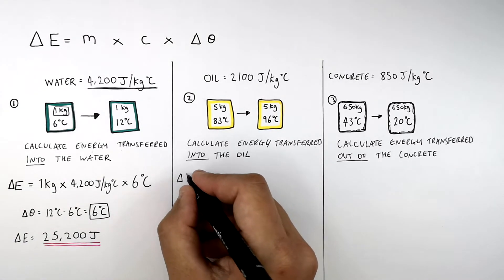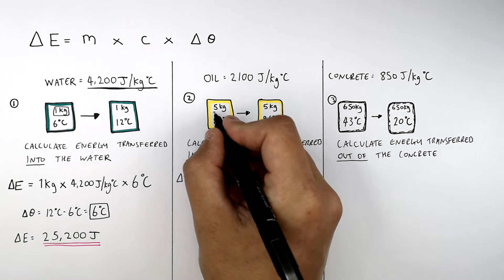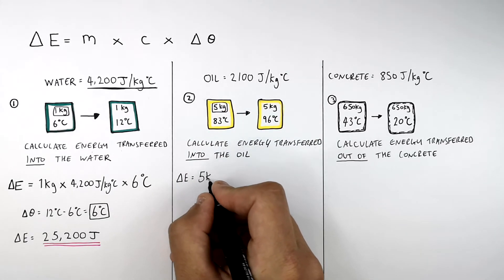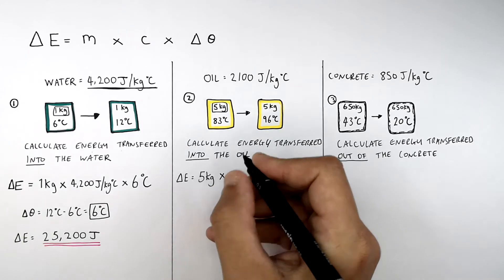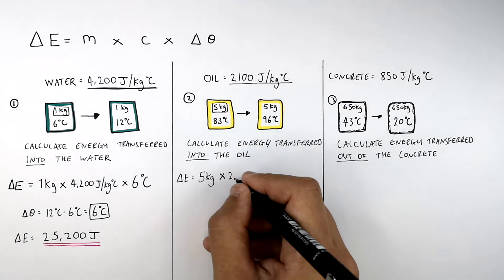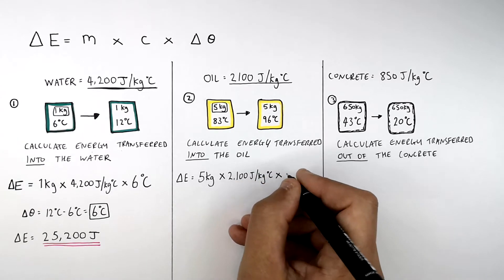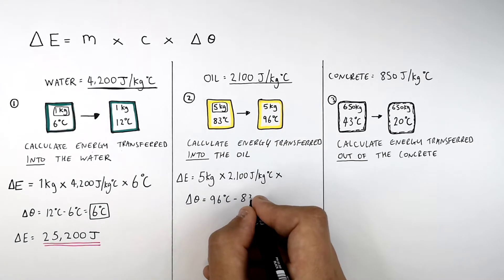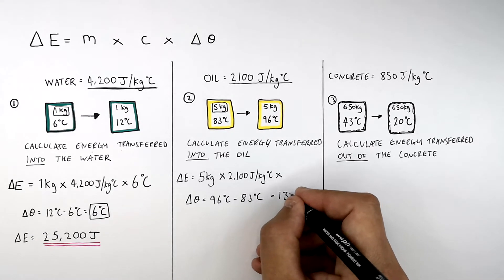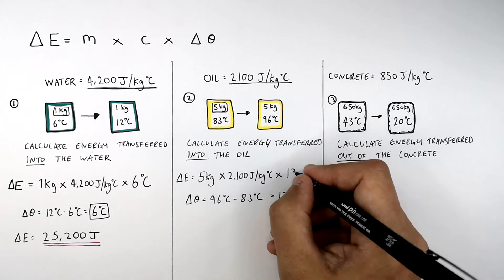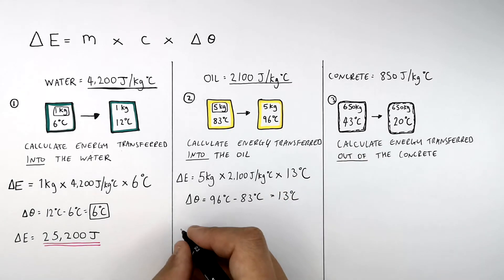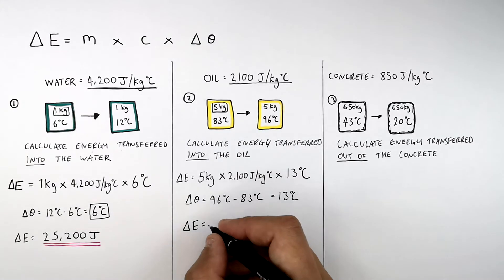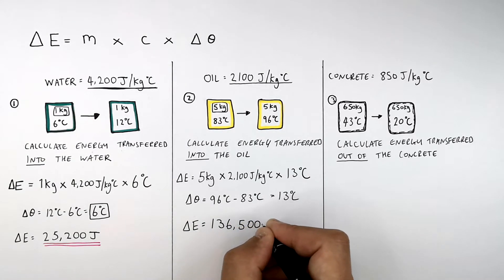We want to calculate the energy transferred into 5 kilograms of cooking oil to increase its temperature from 83°C to 96°C. Energy transferred equals the mass of 5 kilograms, times the specific heat capacity of 2100 joules per kilogram per degree Celsius, times the change in temperature. The change in temperature is 96 minus 83, which is 13°C. So 5 × 2100 × 13 = 136,500 joules of energy.